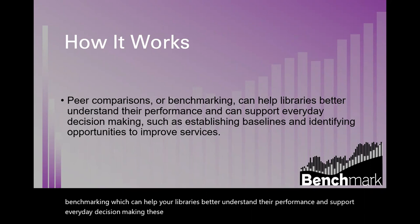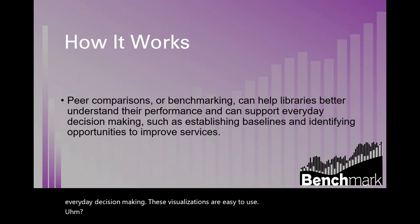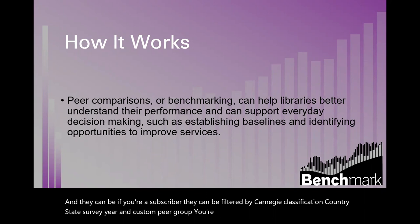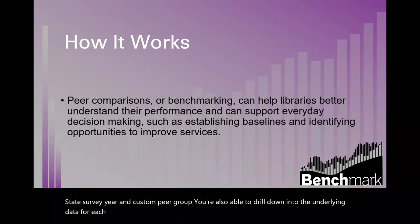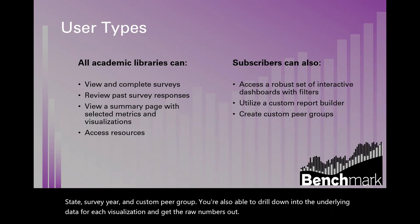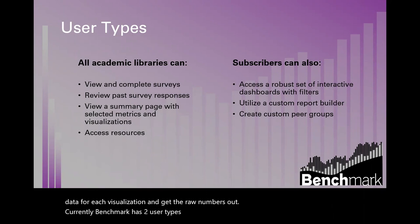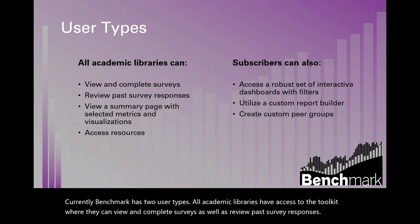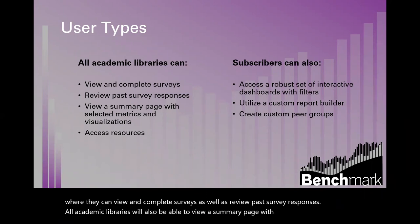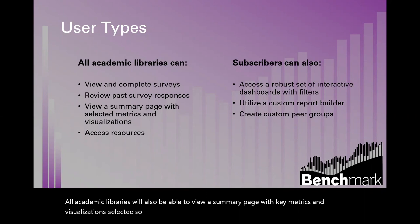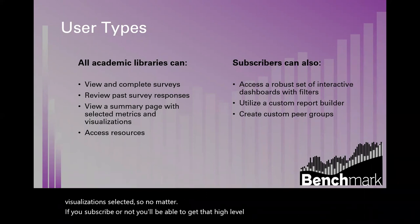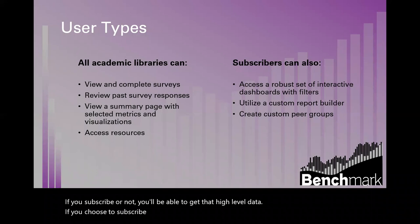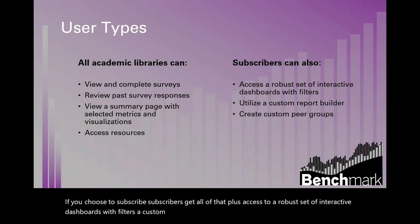Benchmark provides a series of interactive visualizations for peer comparison and benchmarking, which can help libraries better understand their performance and support everyday decision making. These visualizations can be filtered by Carnegie classification, country, state, survey year, and custom peer group. Currently Benchmark has two user types: all academic libraries have access to the toolkit to view and complete surveys and review past responses. Subscribers get additional access to robust interactive dashboards with filters, a custom report builder, and the ability to create custom peer groups.